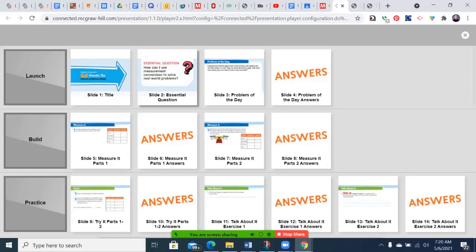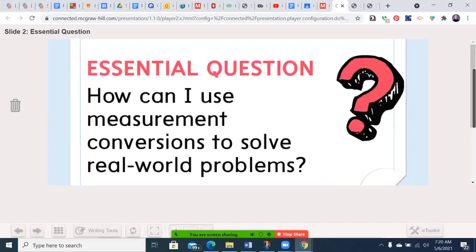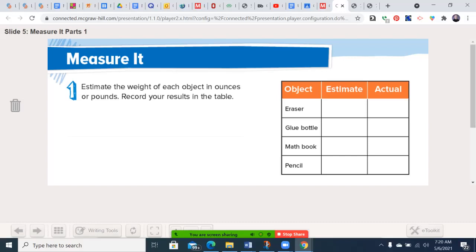You're going to be writing in your book today on page 825. There are a number of yellow words here. Weight is a measure of how heavy an object is, and that's based on gravity. A pound equals 16 ounces, and a ton equals 2,000 pounds.